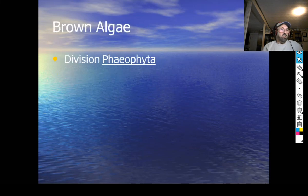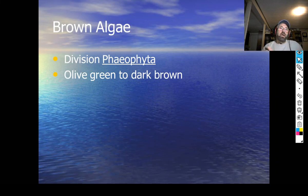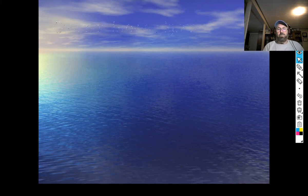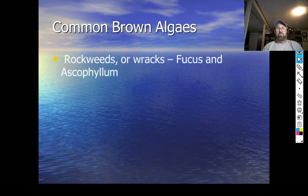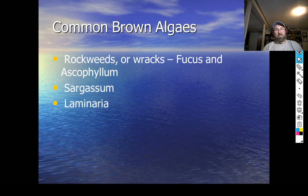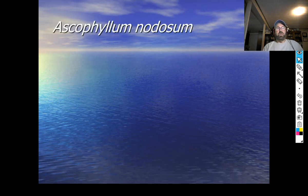The next group is the brown algae, or Phaeophyta. They tend to be olive green to dark brown. Most of them are marine and pretty large — mainly the kelps. Rock weeds and wracks are common; if you've ever been to the beach and seen things hanging off the rocks, that's either Fucus or Ascophyllum. You might have also heard of Sargassum — there's a whole area in the Atlantic Ocean called the Sargasso Sea, named for Sargassum.